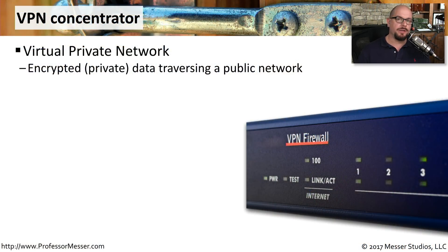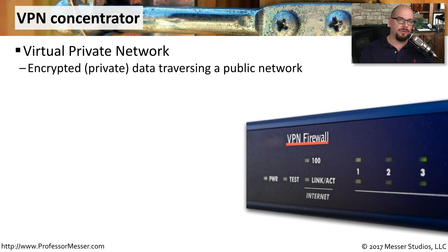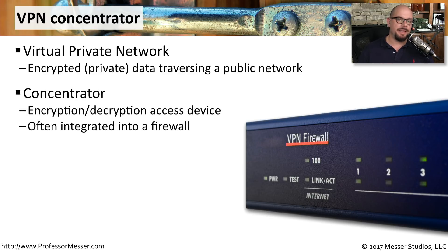One of the challenges with communicating across the internet is we're never quite sure who might be in the middle and able to see the traffic going by. For that reason, we will often encrypt the traffic between two points. One of the most common ways to do this is with a virtual private network, or VPN. This allows us to set up an encrypted tunnel, and any traffic sent through that tunnel will be encrypted and completely useless to anybody who might listen in. It's common to implement this using a VPN concentrator — a device specifically designed to provide encryption and decryption of network traffic, allowing many people to use this mechanism simultaneously.